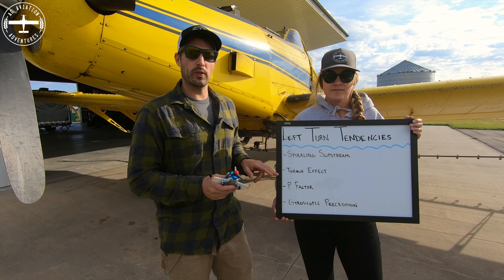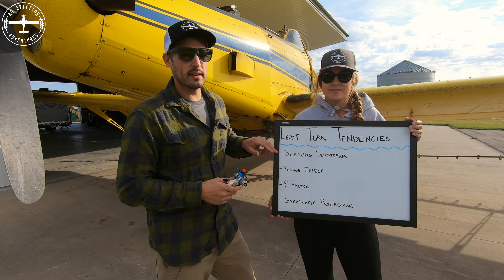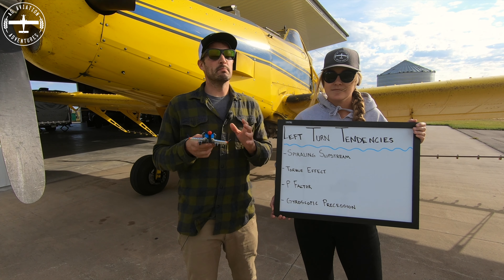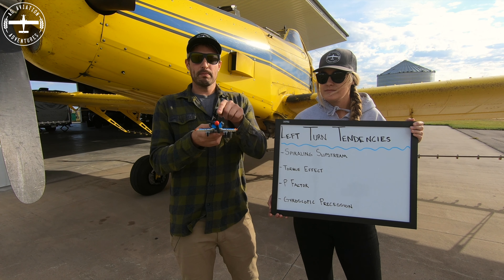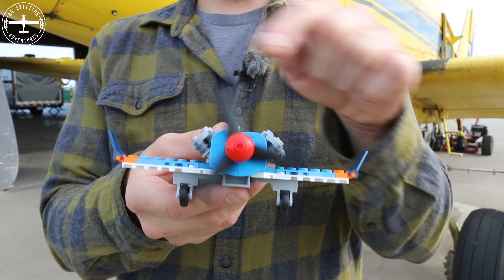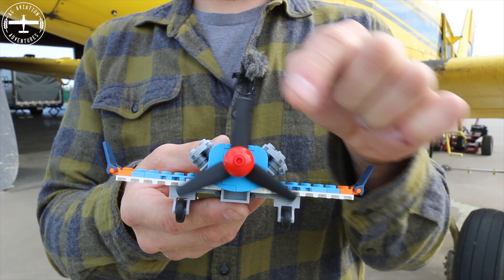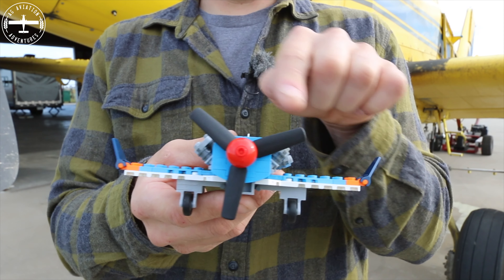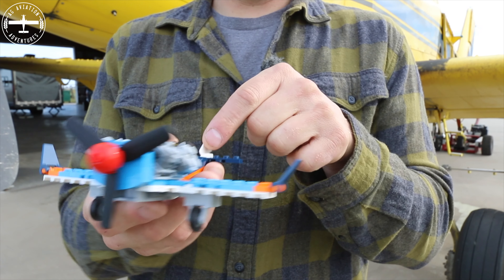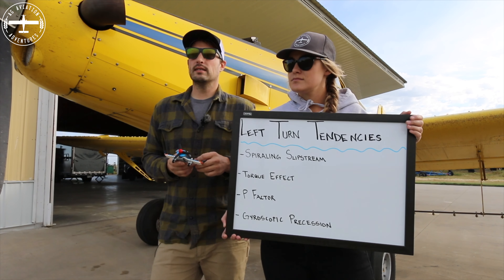Because of these four things right here that we will touch on very quickly. The first one is the spiraling slipstream. The propeller in this aircraft, as well as in most aircraft, when sitting in the cockpit, turns this direction right here. As it turns this direction, it is actually causing airflow to spiral around the fuselage of the airplane. As that airflow works its way to the back of the airplane, it ends up hitting the tail on the left side.